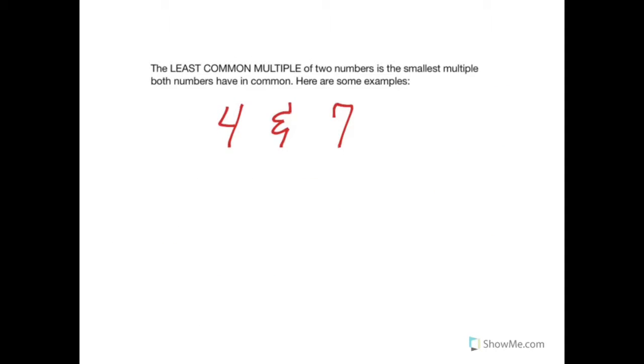The least common multiple of two numbers, or more than two numbers, is the smallest multiple that both numbers have in common. Here are some examples. So if I asked you to find the least common multiple, or LCM, of four and seven. I always make a little chart. Start with four on top, seven below.